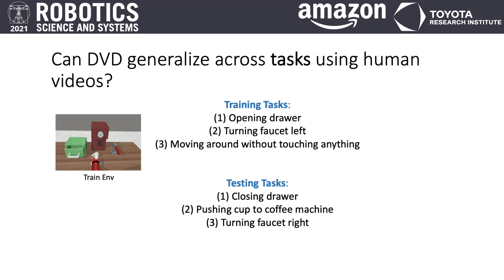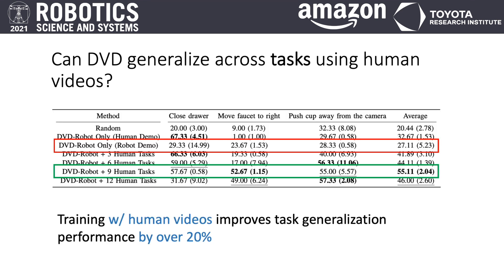Now that we've seen that environment generalization is significantly improved by using human data, what about generalization to new tasks? In this case, we do not train on any human or robot data from the test tasks, and instead train DVD on robot videos of three different tasks from the training environment, as well as varying amounts of in-the-wild human videos. Similar to the conclusions of the previous experiment, we find that training with human videos significantly improves performance on unseen tasks more than using only robot videos.